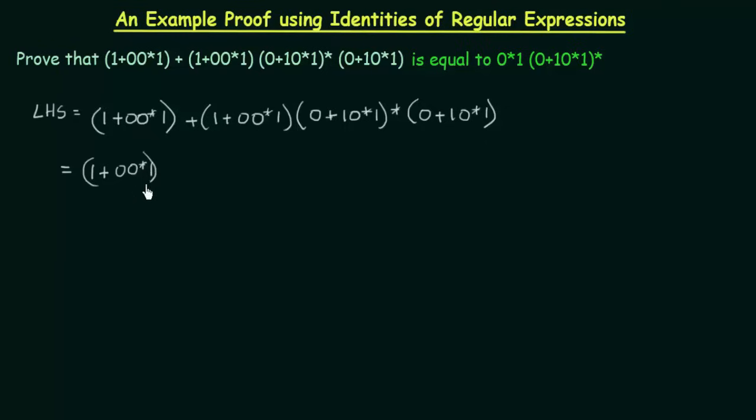If I take it as common, what do I get? Here, once it is taken as common, this becomes epsilon. And plus, this is taken out. These two terms are remaining. So let me write these two terms: (0+10*1)* (0+10*1).